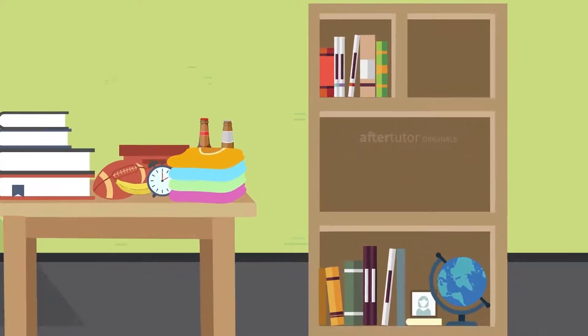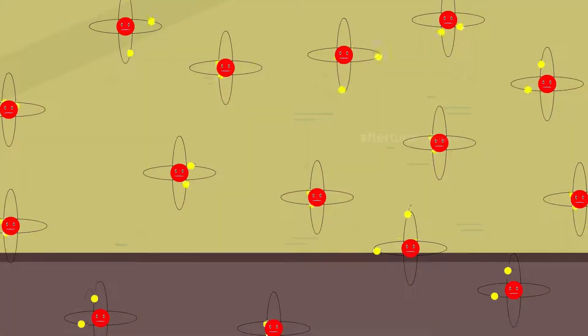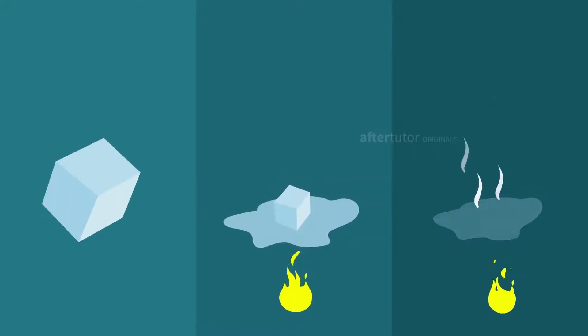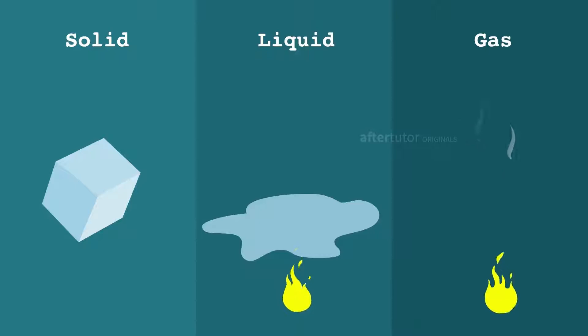Matter consists of many tiny particles called atoms. Matter can be grouped into three states: solid, liquid, and gas.